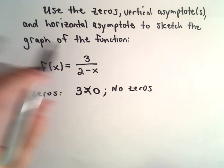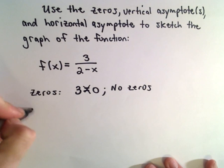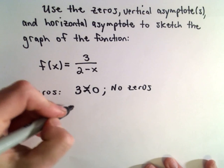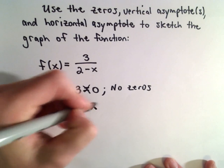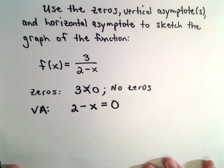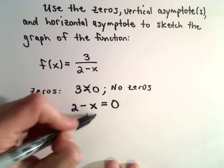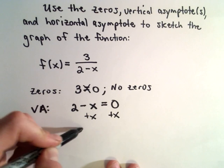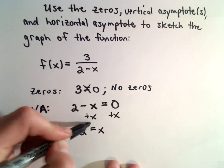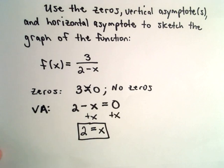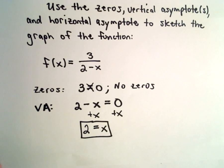To find the vertical asymptote, we'll take the denominator, set that equal to 0, and then solve for x. So to solve for x here, we add x to both sides. So x equals 2 will be our vertical asymptote.